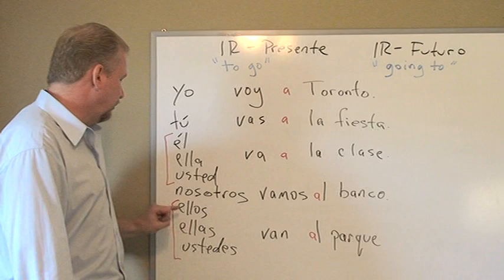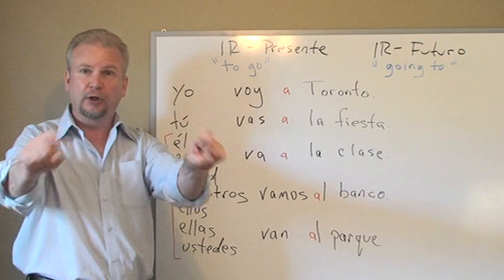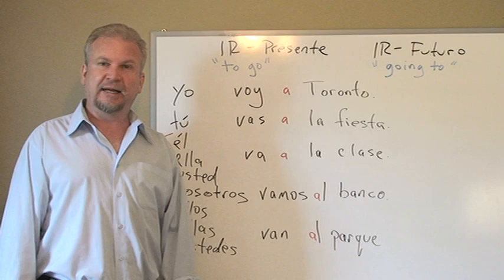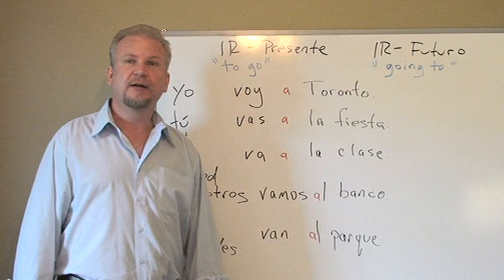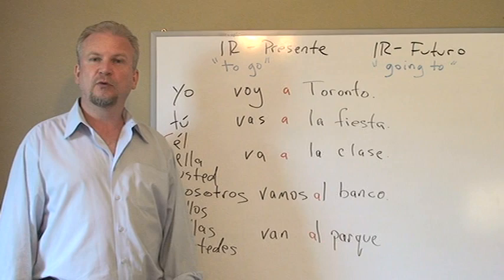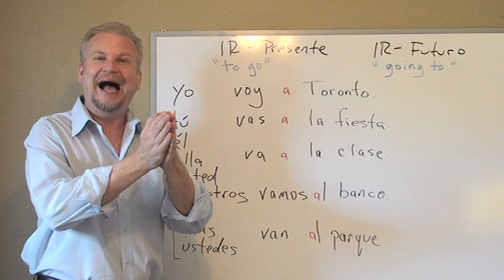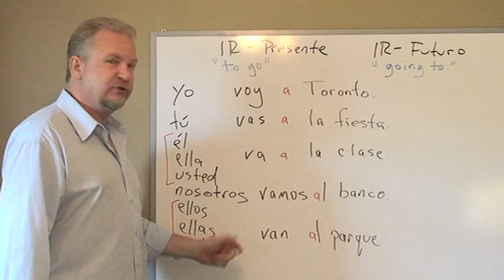Another example: ellos, ellas, and ustedes — they masculine, they feminine, and you plural — the verb is 'van.' Ustedes van al parque — you go to the park, or they go to the park. Again, parque is masculine, so we don't say 'a el parque.' We use the contraction: al. Ellos van al parque — they go to the park.